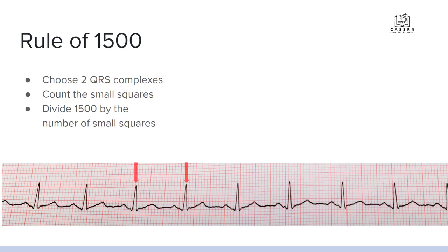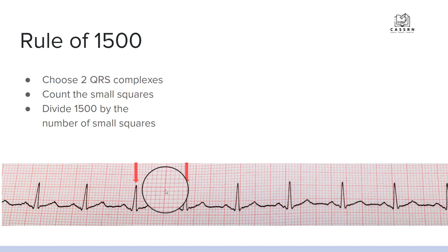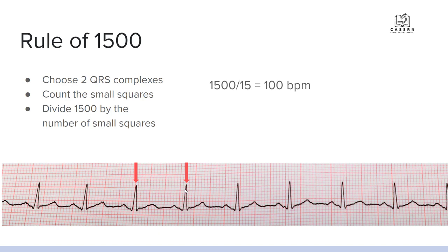We choose the same two QRS complexes used previously and count all the small squares between them: 1, 2, 3, 4, 5, 6, 7, 8, 9, 10, 11, 12, 13, 14, 15 — with about half a square at the edge, we'll call it 15. So 1500 divided by 15 equals 100 beats per minute. You can see this matches the rule of 300 result, confirming both are accurate here.